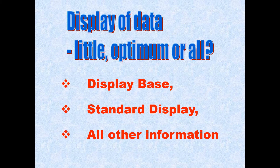The three categories are: display base, standard display, and display on request — also referred to as all other information. Let's see what information is included in each of these displays, and then towards the end we'll also look at how to go into the ECDIS and select the required display. I'll also give you some important information about each display which will help you for your oral examinations.